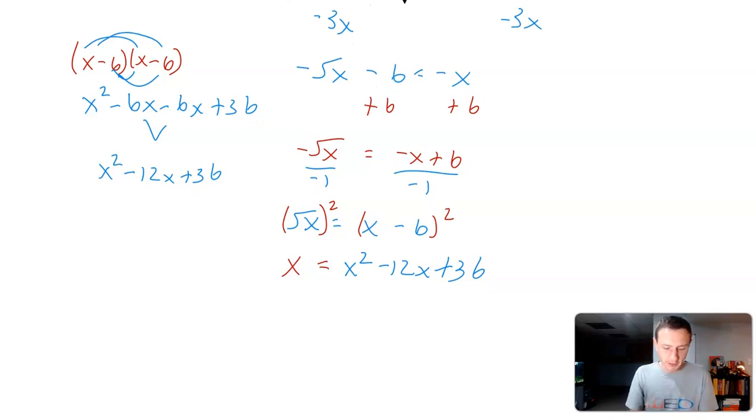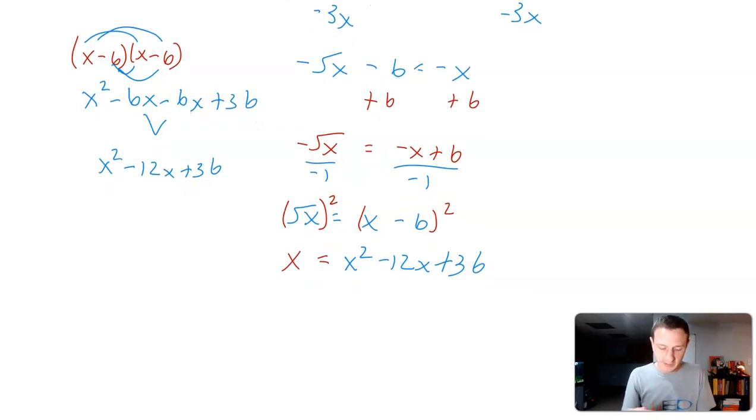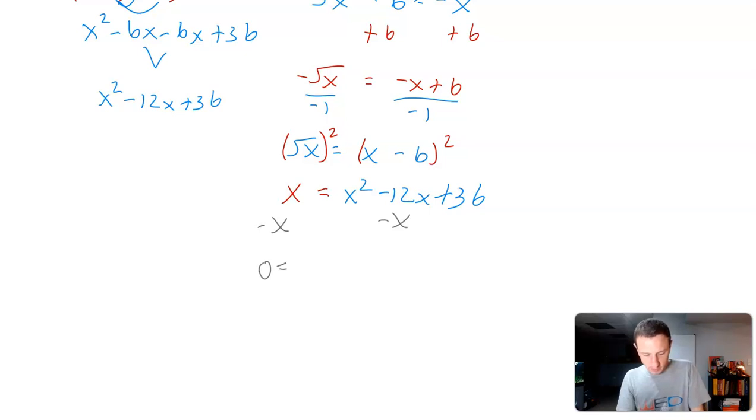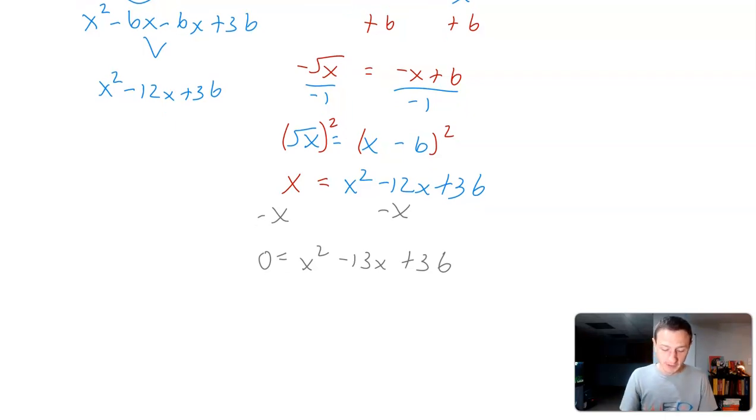Now this is looking pretty good because now I can set this equal to 0, hopefully factor or do something with that. I'm going to subtract the x over, so I get 0 equals x squared minus 13x plus 36. Now I can factor because I have a trinomial where I want two numbers that multiply to 36 and add up to negative 13.